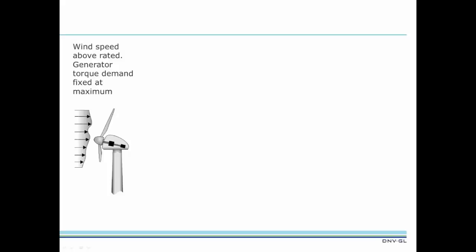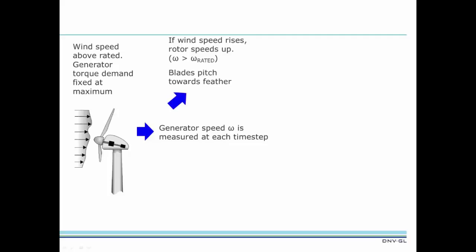Let's look at a summary of that. With wind speed above rated, the generator torque demand is fixed at the maximum value. Generator speed is measured at each time step. If wind speed rises, the increased aerodynamic torque will cause the rotor speed and output power to increase. The response to this increase in speed is to pitch the blades towards feather. This reduces the aerodynamic torque, slowing the rotor. The rotor returns to rated rotor speed, and power remains constant.